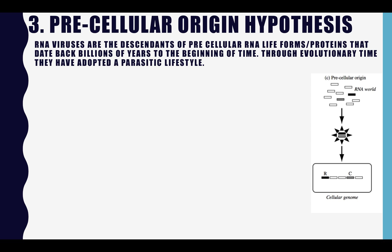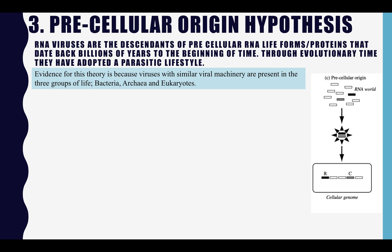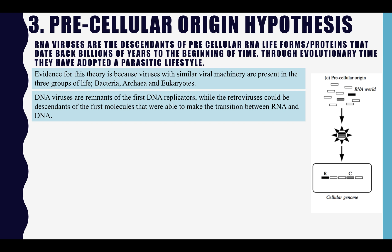The third hypothesis is the pre-cellular origin hypothesis. This suggests that RNA viruses are the descendants of pre-cellular RNA life forms, or proteins, that date back billions of years to the beginning of time. Through evolutionary time, they have adopted a parasitic lifestyle. The evidence for this theory is that viruses with similar viral machinery are present in three groups of life: bacteria, archaea, and eukaryotes. DNA viruses are remnants of DNA replicators, while retroviruses are the descendants of the first molecules that were able to transition between RNA and DNA.